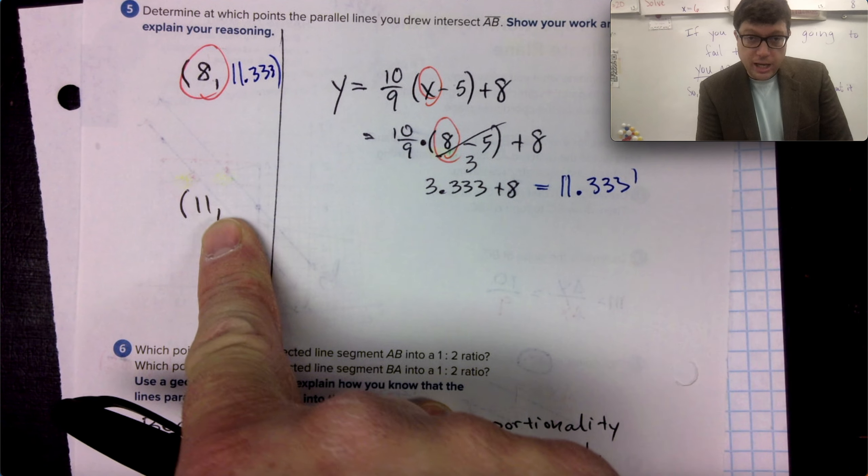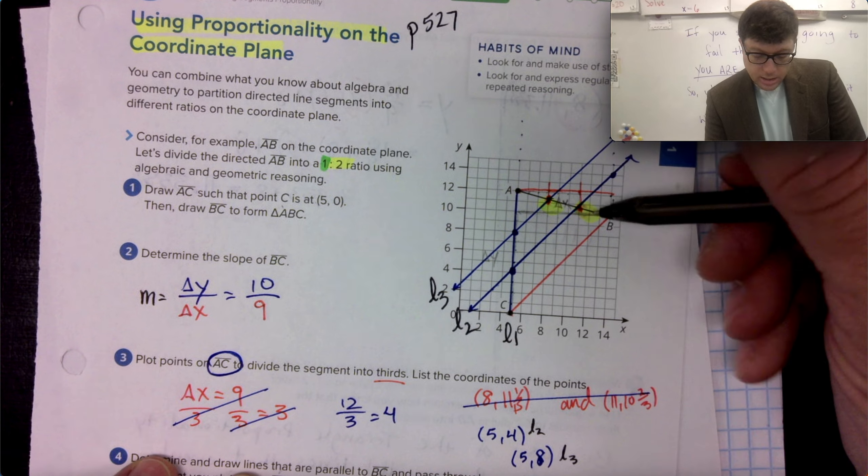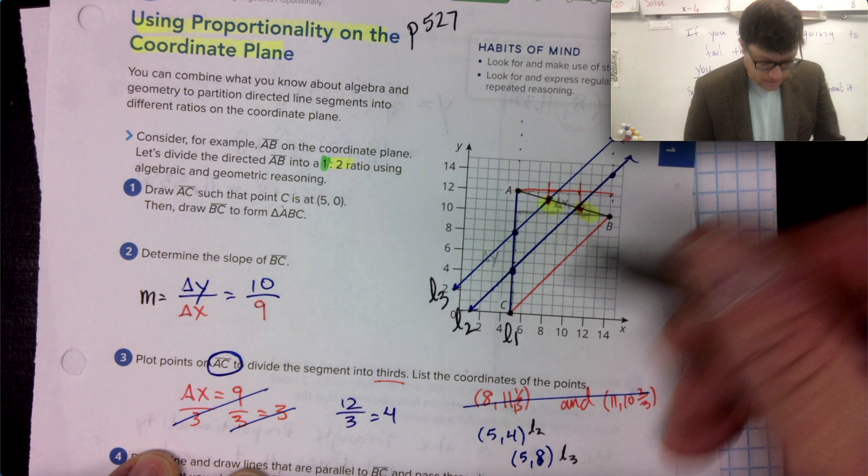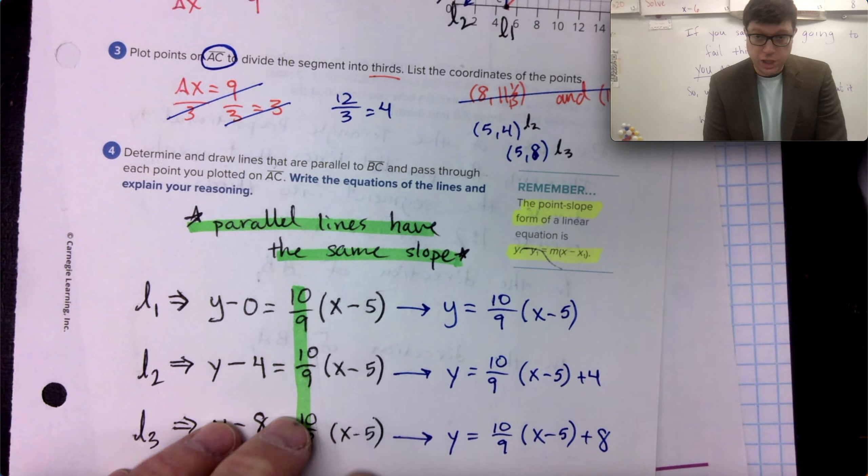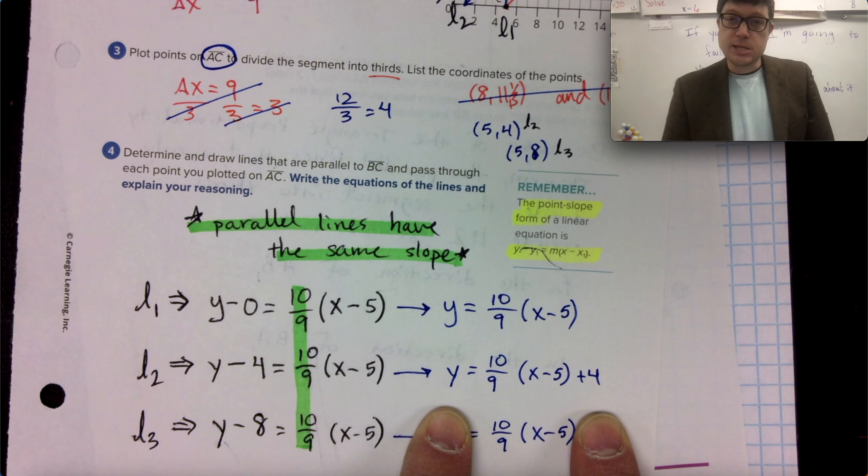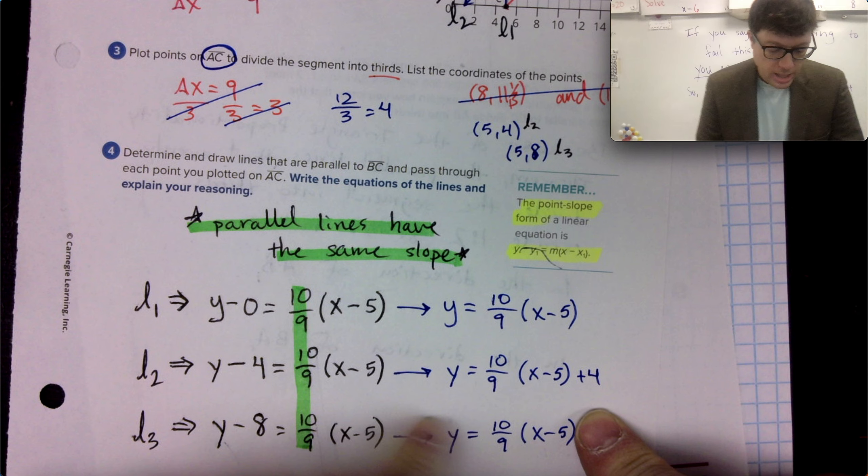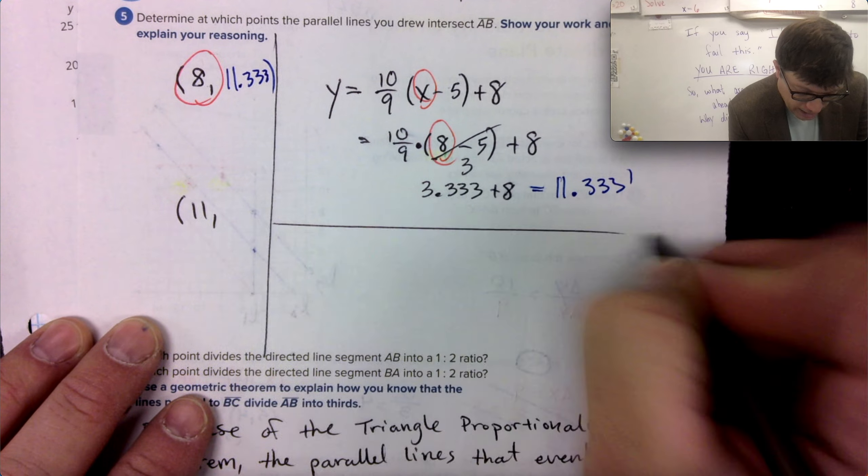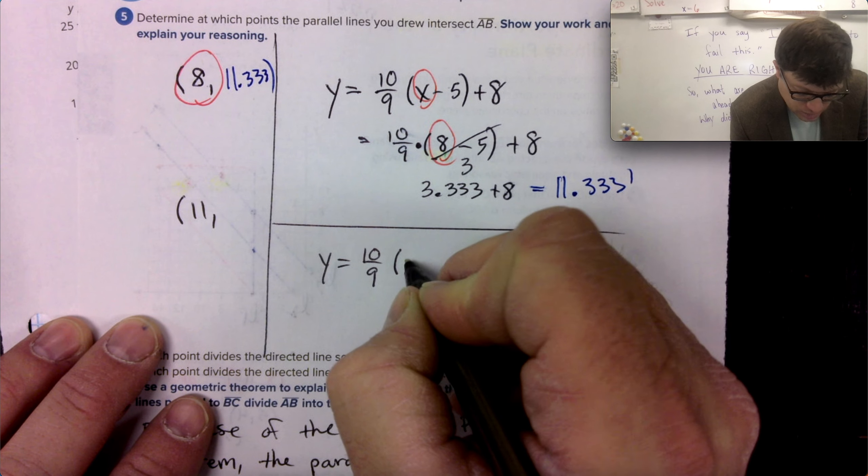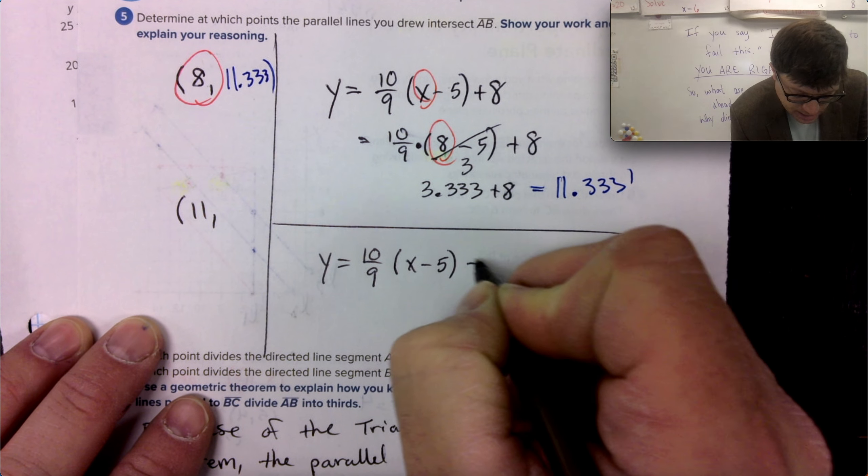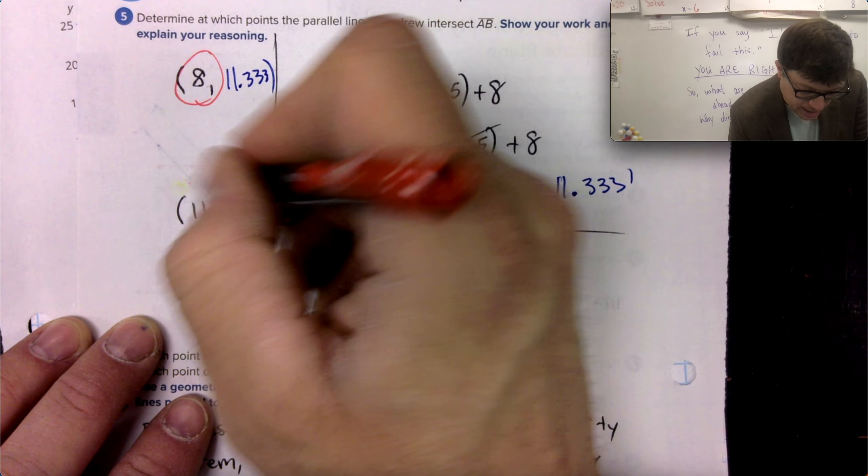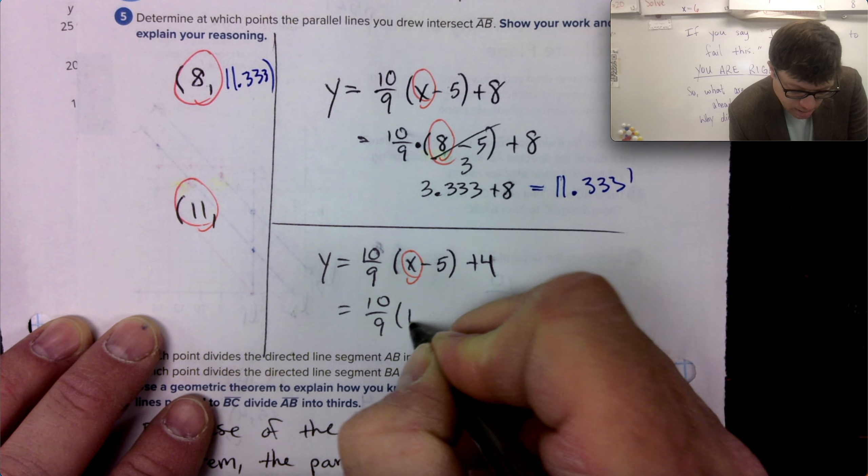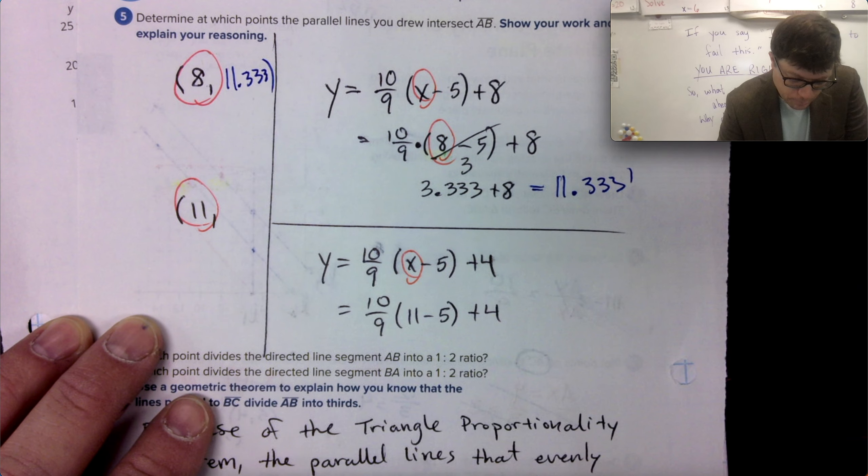So for the 11 coordinate, the X coordinate that is 11 is on line two. So I'm going to take the line two equation, 10 ninths times a quantity X minus five plus four. And I'm going to replace X with 11. So Y equals 10 ninths times quantity X minus five plus four. And I'm going to replace the X with 11. So 10 ninths times 11 minus five plus four.